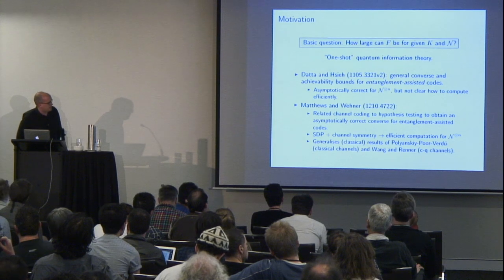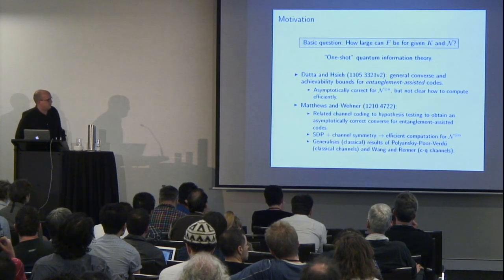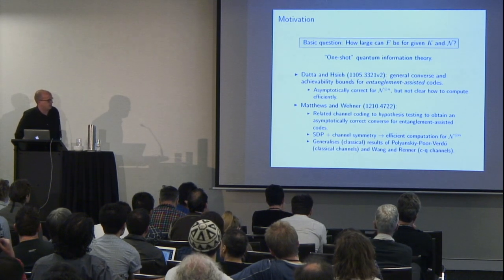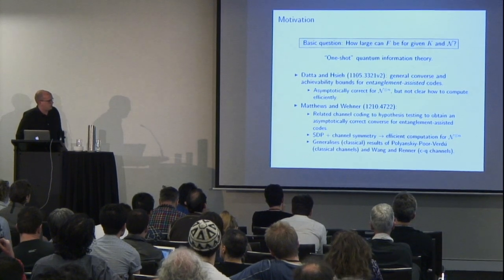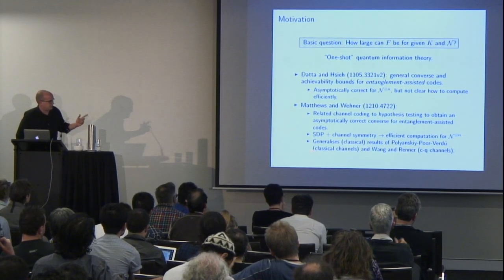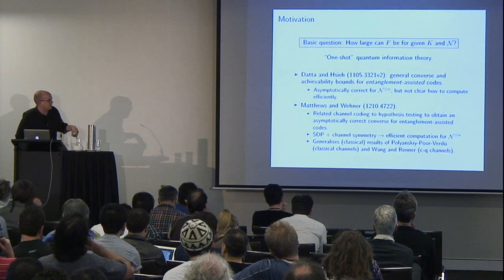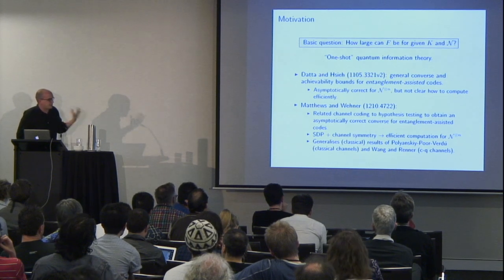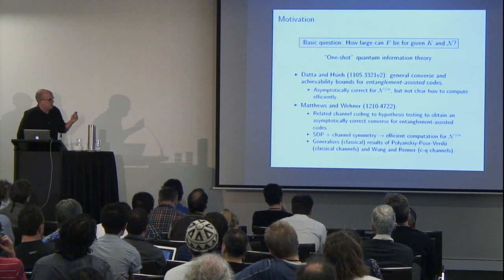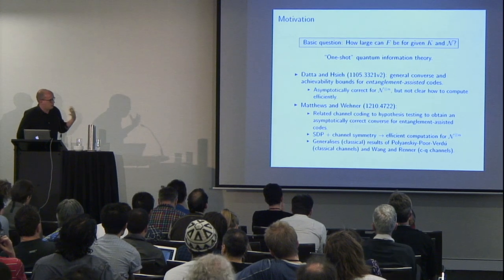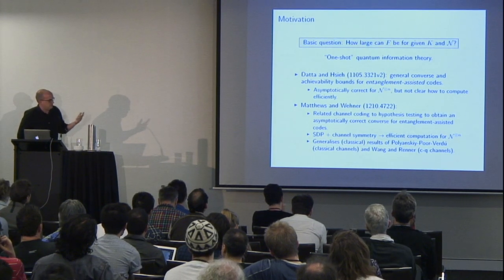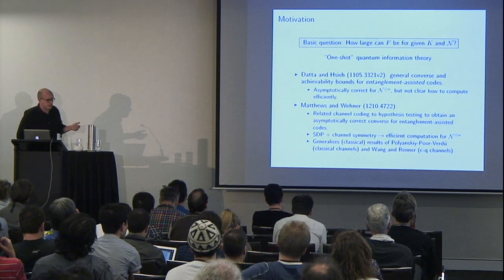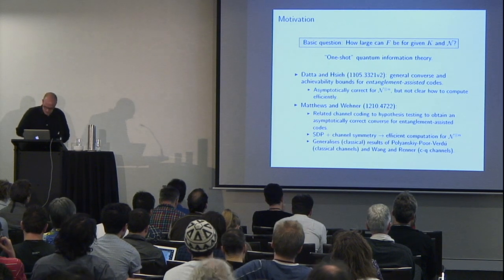In some work with Stephanie Werner, which I talked about at QIP a couple of years ago, we were able to generalize results of Polyansky, Poor, and Verdú, and Wang and Renner, which applied to classical and classical-quantum channels. They relate that problem to hypothesis testing to get asymptotically correct converses for entanglement-assisted codes — the bound is an SDP and we can use the permutation covariance of many uses of a memoryless channel, which allows efficient computation of the bound.